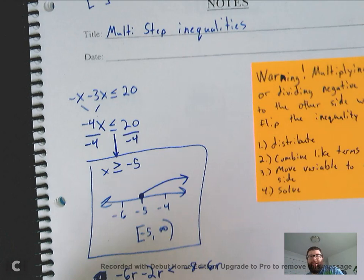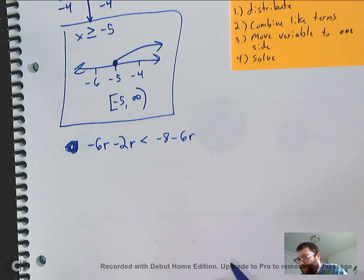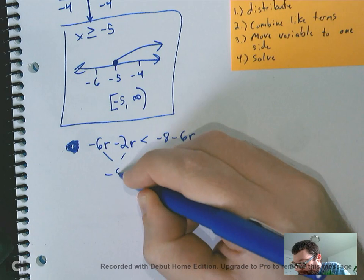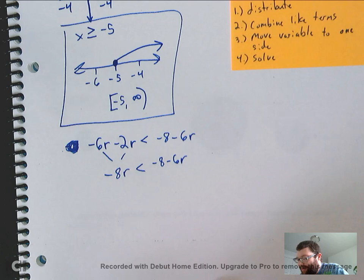Let's try another one. So, let's look here, this one. Again, first step, distribute if I can. Nothing to distribute. Combine like terms. Look, I've got some like terms on this side. Combine those. I would get negative 8r is less than negative 8 minus 6r. Next step is to move the variable to one side.